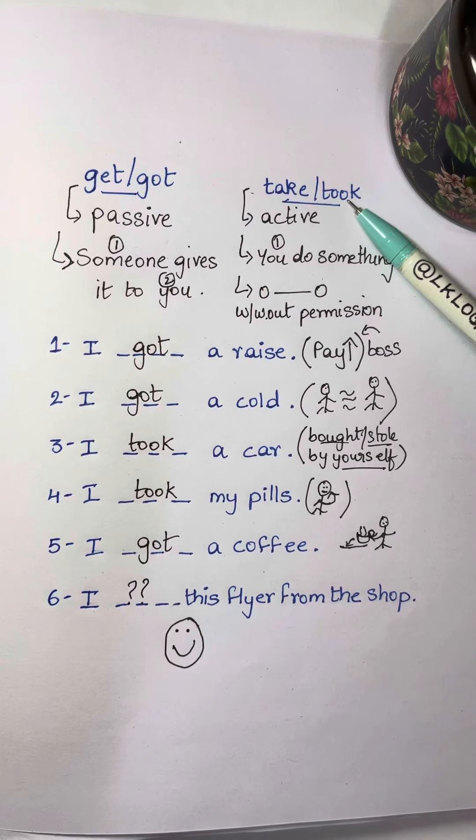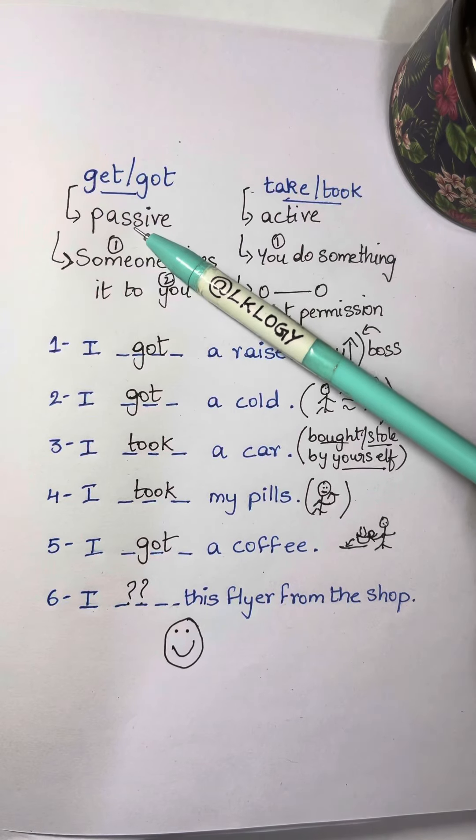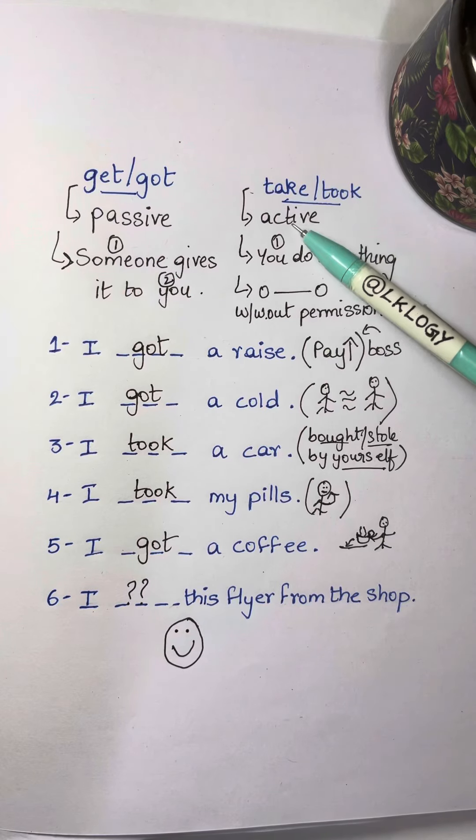Get or got, take or took. What's the difference? Get or got is a passive situation. Take or took is an active situation.